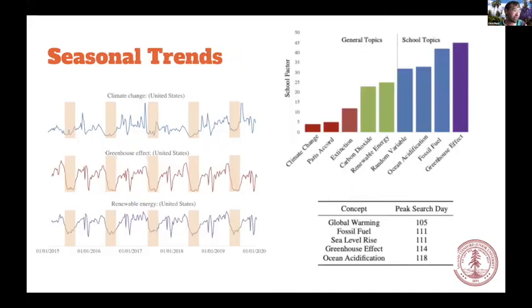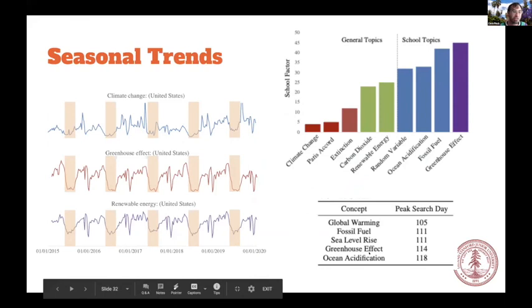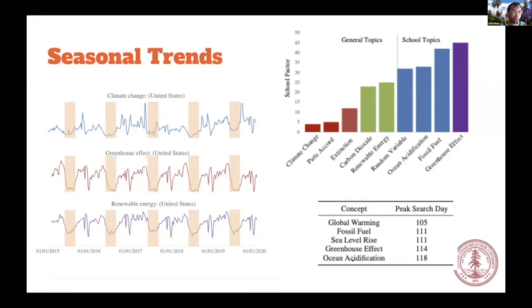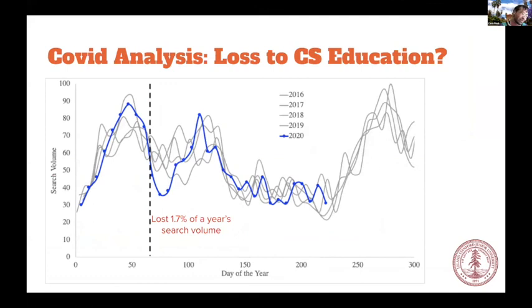Another thing we can look into is seasonal trends, and we found this very interesting for climate change education. We can see how different concepts are learned in school versus out of school by looking at how much there is a drop when there's a holiday in the country. For things like greenhouse effect, there's a huge drop during holidays; but for other concepts like extinction, there's not that much of a drop — so we can figure out how scholastic each topic is. Similarly, we can look at when the peaks of each topic occur, so we can figure out the order of concepts in a curriculum. People tend to learn about global warming and fossil fuels before sea level rise, and greenhouse effect before ocean acidification. We've just scratched the surface, but there are all these really cool things you could do — temporal patterns, literacy indices, the world's our oyster.